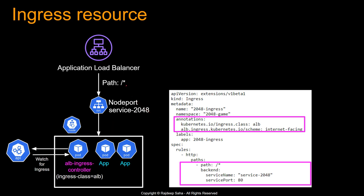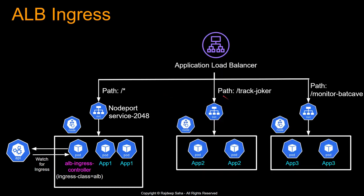Instead of slash-asterisk, if you define a different path, it just adds a different path rule to this load balancer. The next time you point to another service with a different path, it simply adds a rule to the existing application load balancer. Because if you define more ingress resources with ingress class ALB, the ingress controller knows it already has an application load balancer for this ingress class, and all it needs to do is add more rules for different paths pointing to different services underneath.